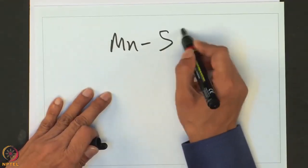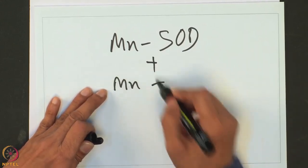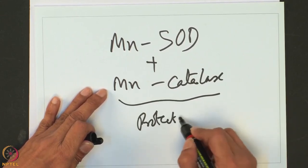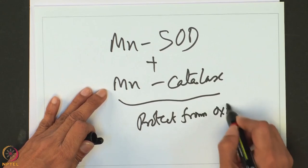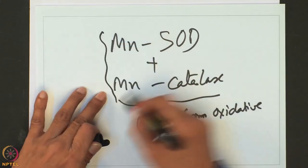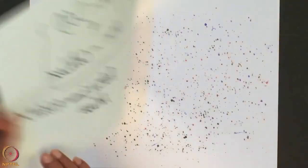Together, when superoxide is dismutated to O2 and H2O2 by MnSOD, the H2O2 is then dismutated to water and O2 by manganese catalase. So MnSOD plus manganese catalase together protect cells and tissues from oxidative stress.